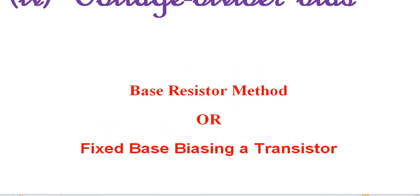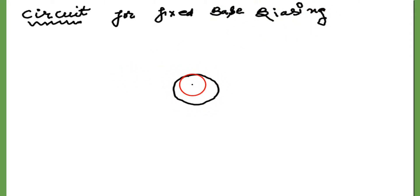Base resistor method. Now we are discussing different methods so as to get the output signal exactly of the same shape as that of the input signal. So this is our first biasing method. We are using NPN transistor.